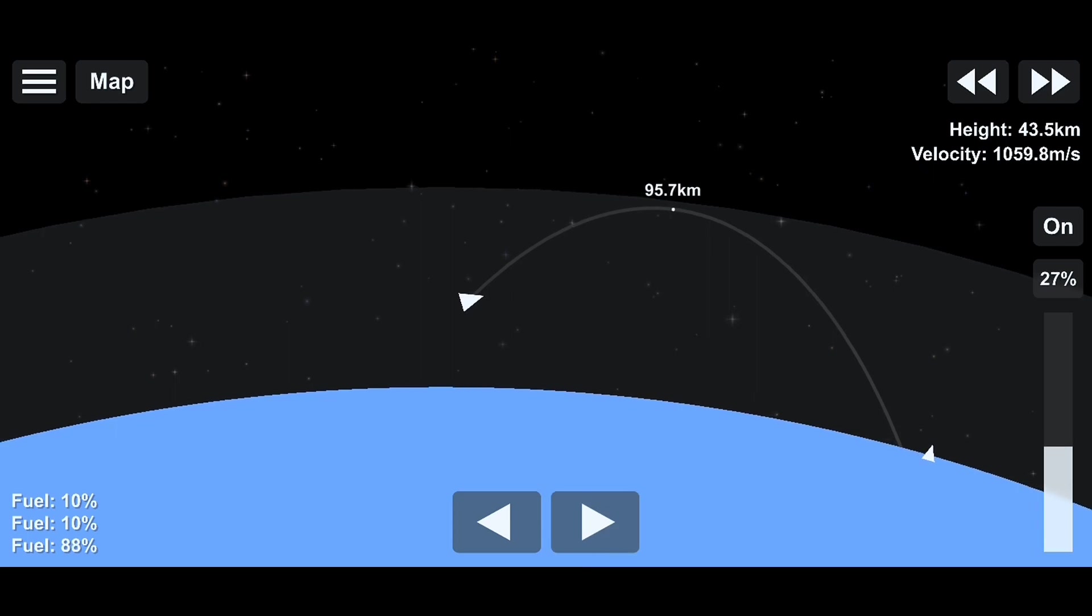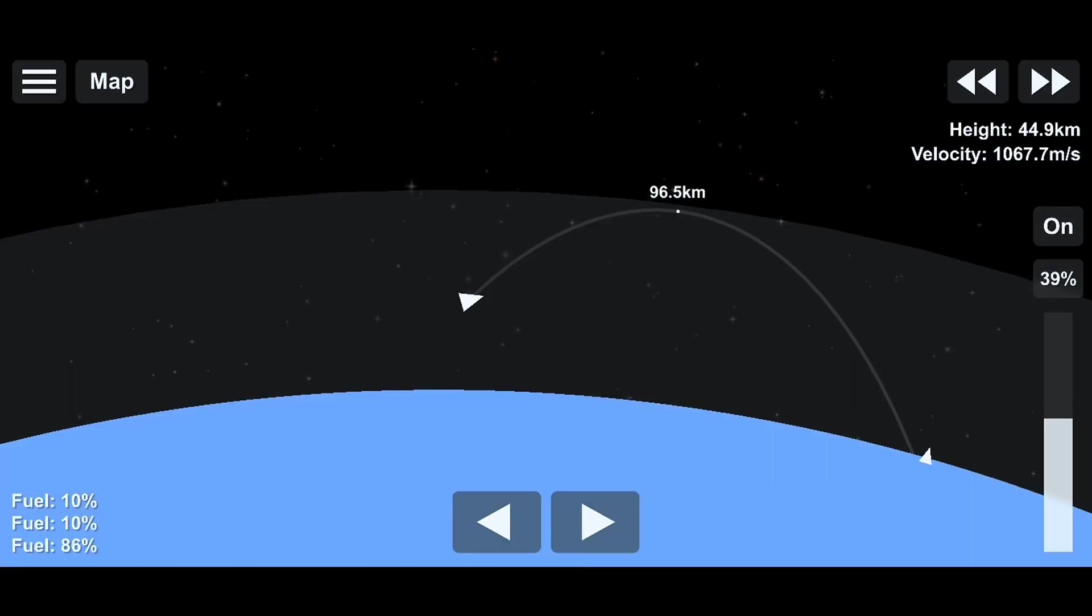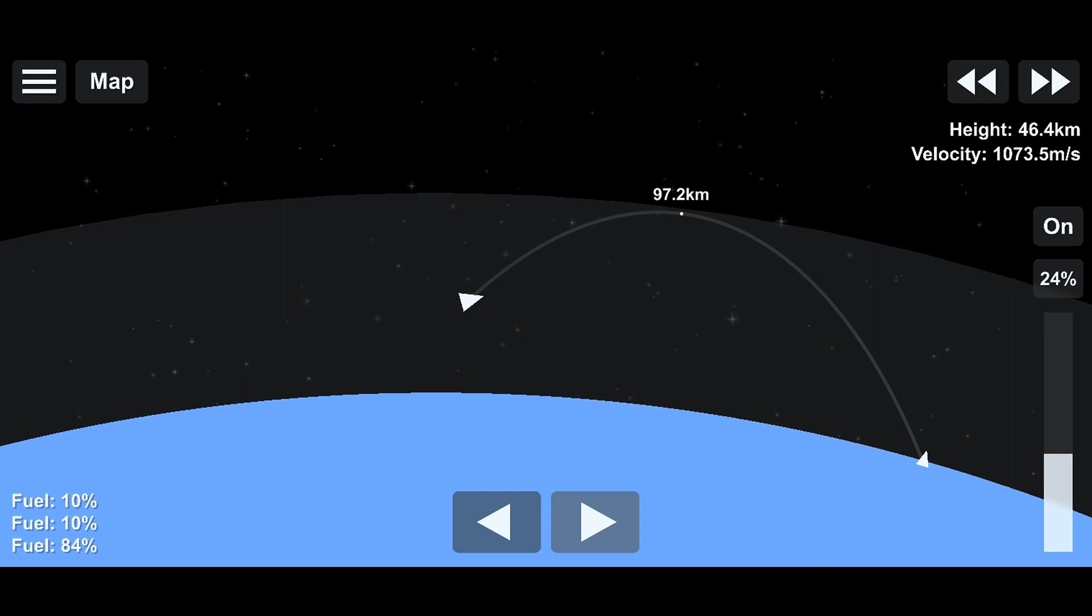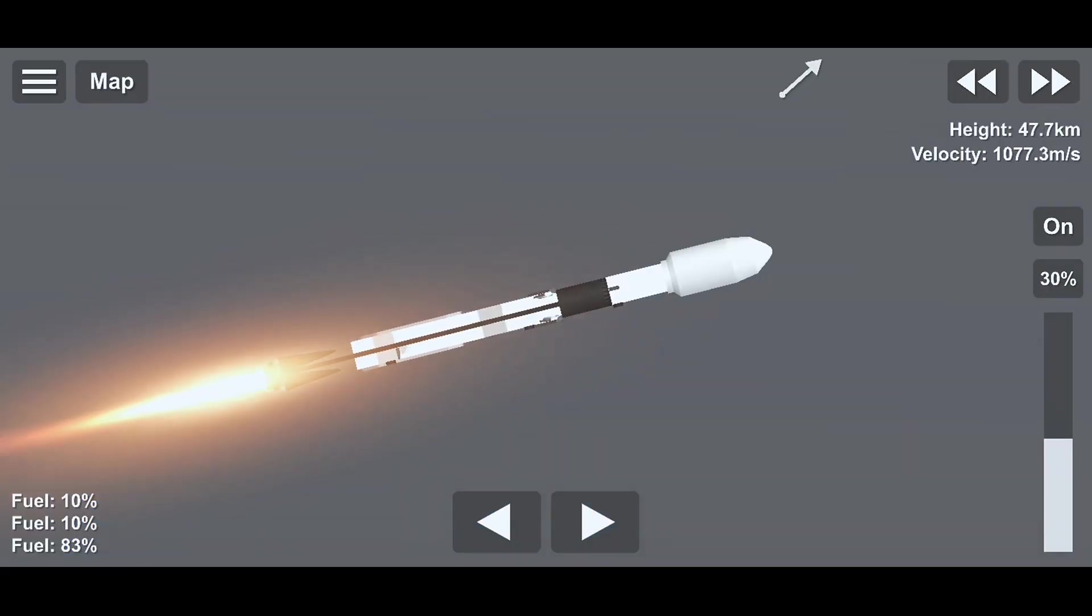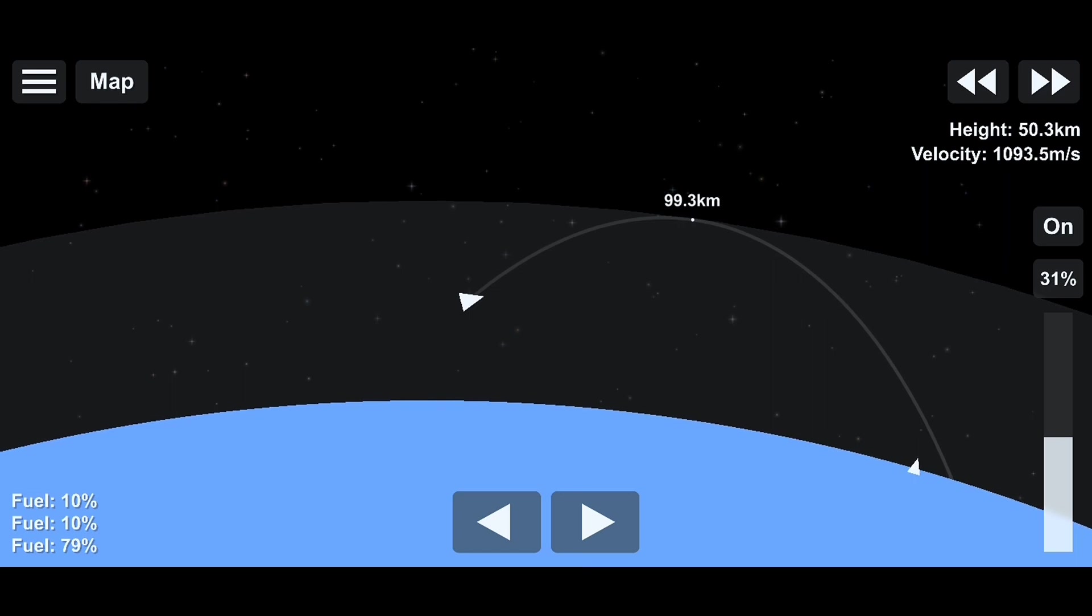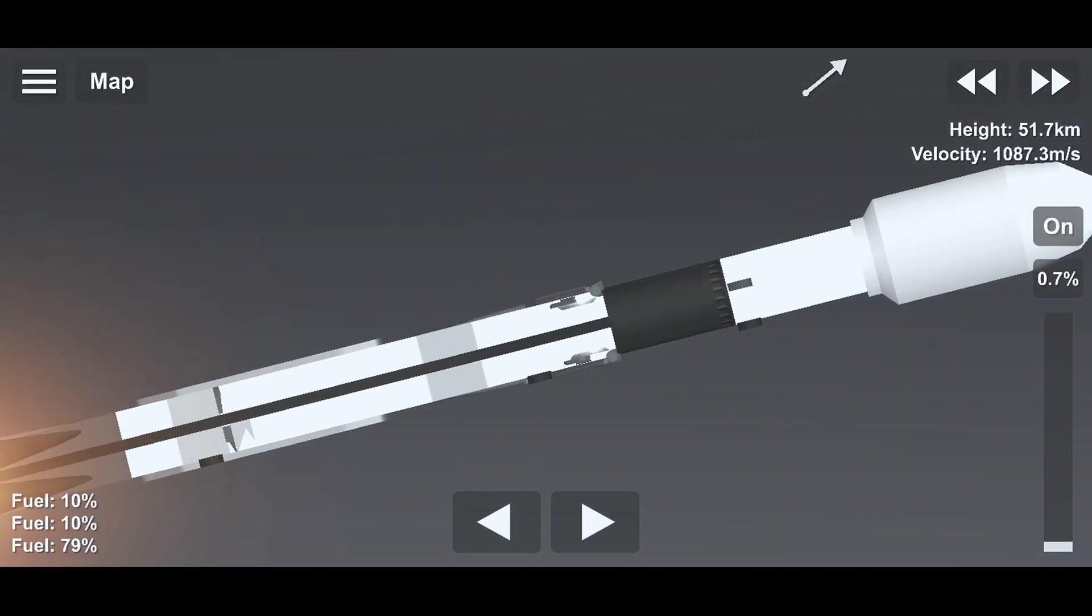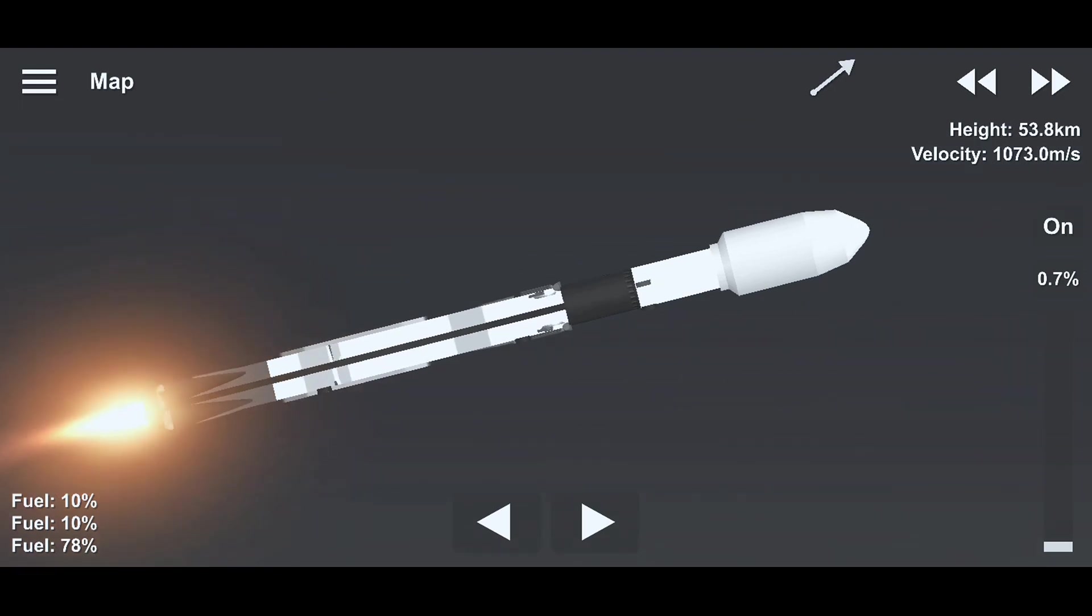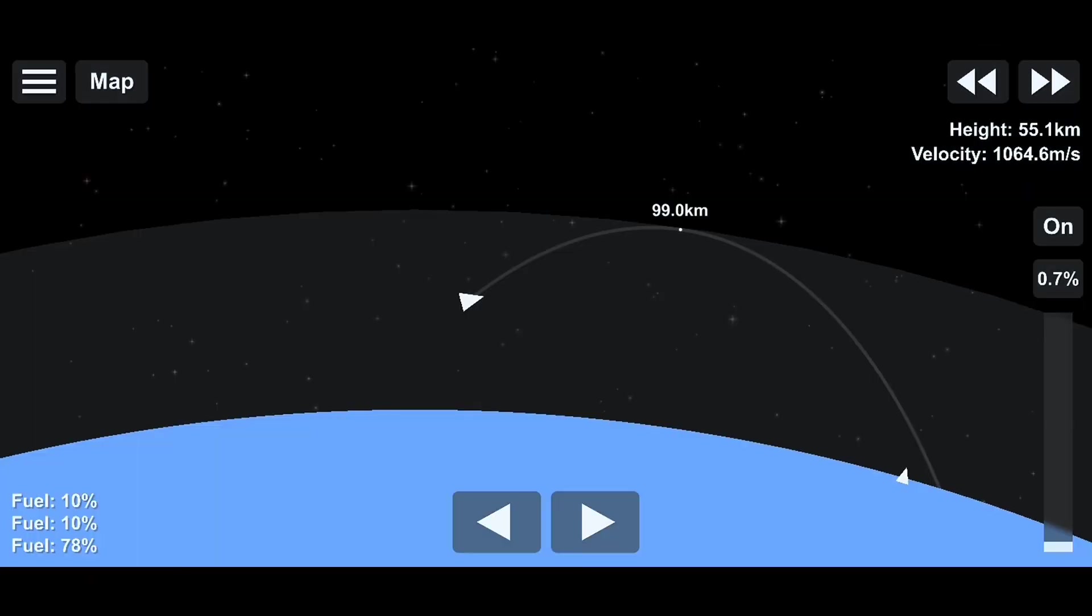Nice view from the ground camera looking up the long plume coming out of the nine Merlin 1D engines. Now, major event coming up will be main engine cutoff coming up at just after two and a half minutes called MECO. We shut off all the nine engines. We'll separate the first stage from the second stage and we will ignite the second stage engine called SES-1, the second stage engine start number one.